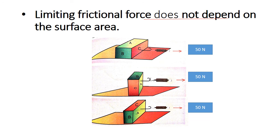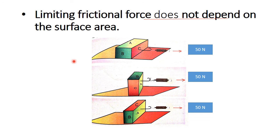Now consider the surface area. Limiting frictional force does not depend on the surface area. Look at these three pictures — the same object, but the surface area in contact with the other surface is different: face A, face B, and face C. In all three instances, to move the object we must give the same value of force. So limiting frictional force does not depend on surface area. Limiting frictional force depends on the nature of the surface and the normal reaction, but not on surface area.